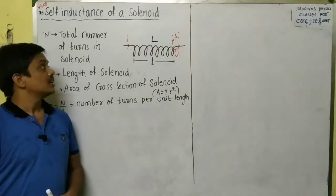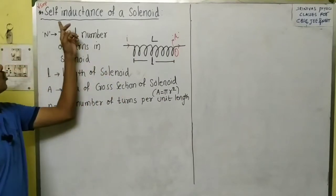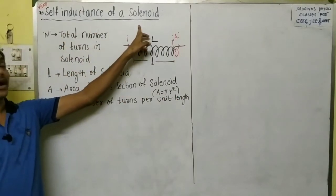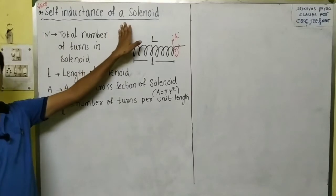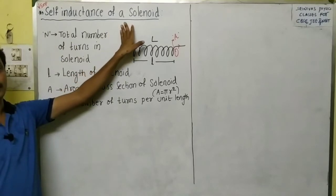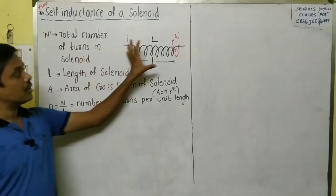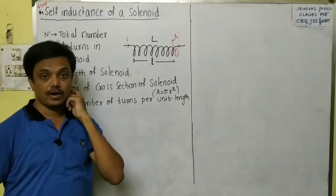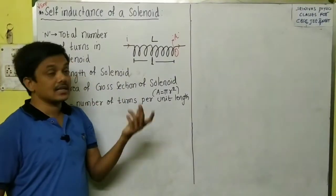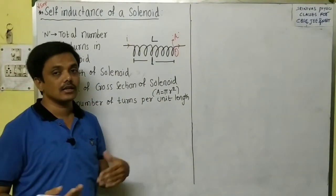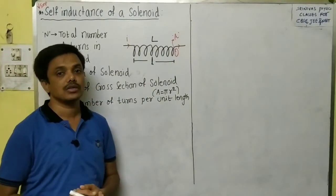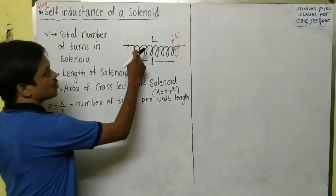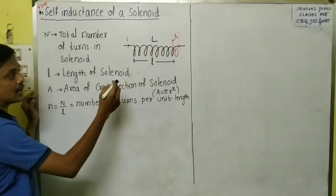Hi to all. Today's topic is self-inductance of a solenoid. I am going to explain the self-inductance of a solenoid, how to derive the self-inductance formula, and what factors the self-inductance depends on. First of all, a solenoid is nothing but a coil.